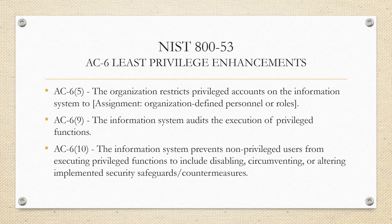AC-6 Enhancement 9: the information system audits the execution of privileged functions. You want to audit those privileged accounts and make sure they are acting within scope, with no malicious intent or malicious behavior behind any of the privileged functions they are performing.